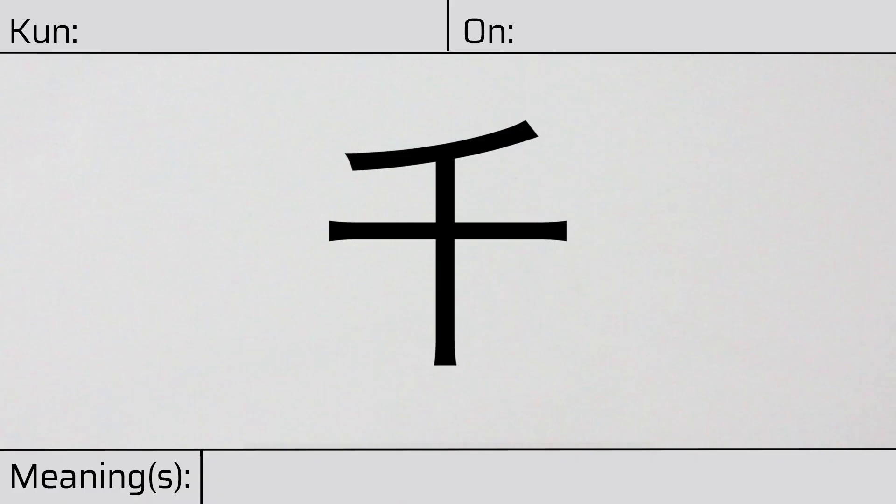Welcome to this lesson on Japanese kanji. Today, we'll be discussing this character. This kanji has a kunyomi, or Japanese reading of chi. And it has an onyomi, or Chinese reading of sen.